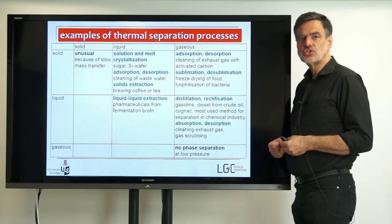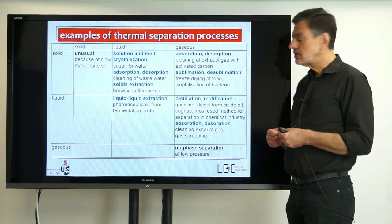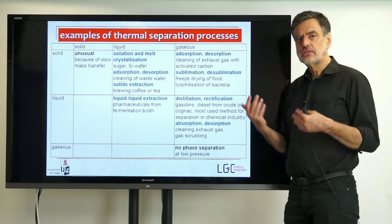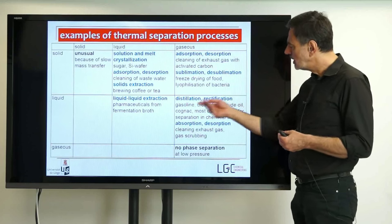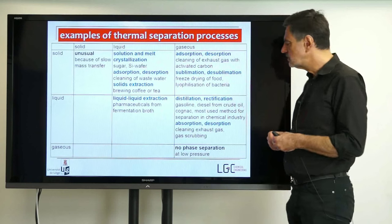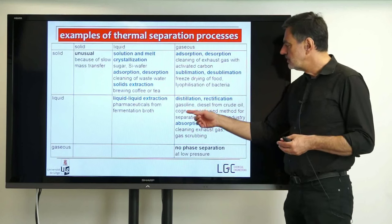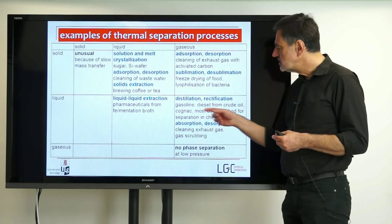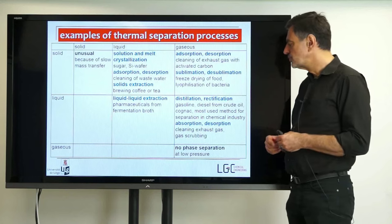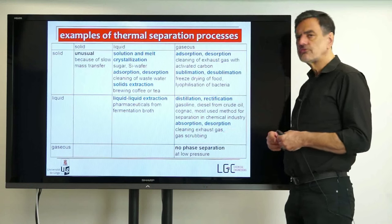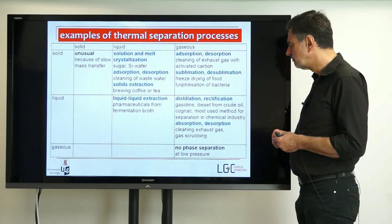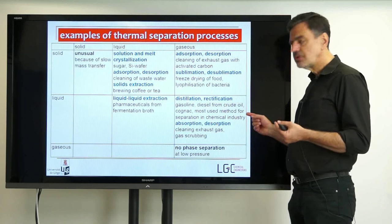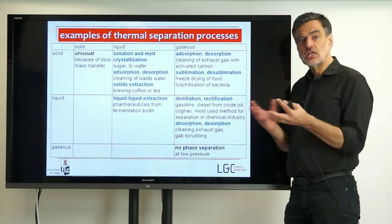Finally we come to the major separation process used in chemical industry: distillation or rectification. The distinction between these two will be covered later in the lectures on distillation. Distillation is used for crude oil preparation to produce gasoline or diesel, and also to produce spirits such as cognac from corresponding wine. Distillation is the most widely applied separation technology in the chemical industry and many other industries that deal with substances.